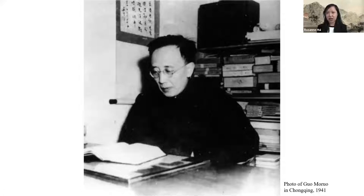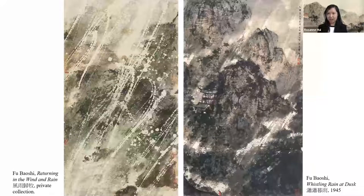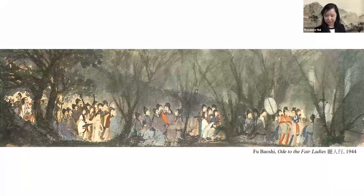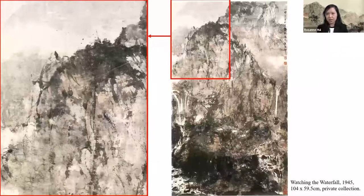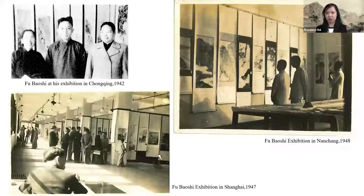Less than two years later, he resigned to return to his teaching position at the National Central University. During his seven-year stay in Chongqing, Fu enjoyed considerable artistic freedom and was much inspired by the beautiful landscape, creating many masterpieces. He invented his signature Baoshi texture stroke during this time. He also held several exhibitions, most notably one in 1942 in Chongqing, for which he wrote a preface that provides substantial information on his thoughts and is a valuable source for art historians today.